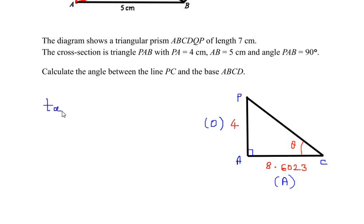We can now write: tan of the missing angle theta equals the opposite side, which is PA, divided by the adjacent side AC. So we can write theta equals, taking the tan on the other side of the equal sign, arc tan or tan inverse.